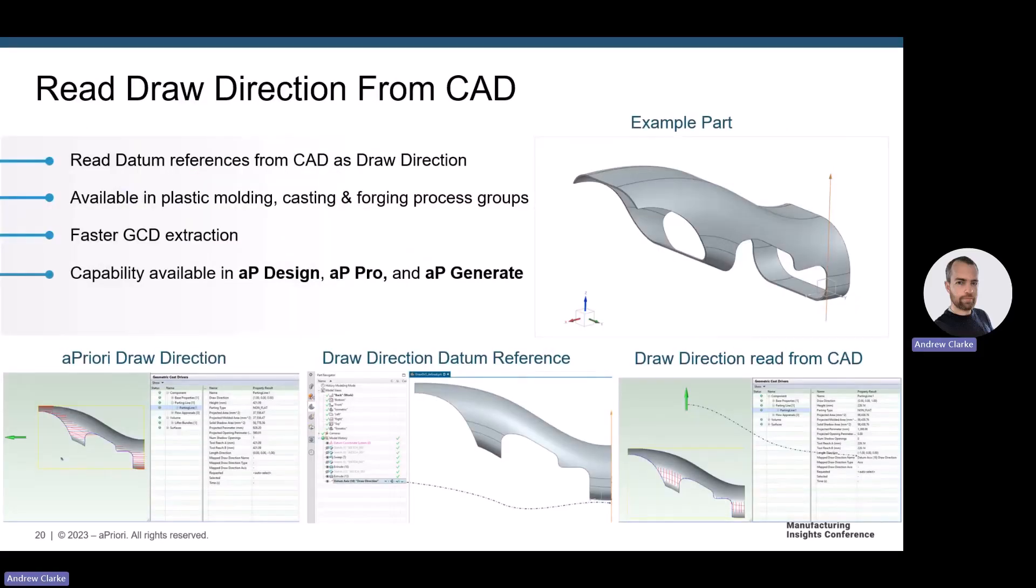We've also made updates to how we set draw direction. Historically, Apriori has provided a powerful proprietary algorithm for analyzing the geometry of molded parts and determining the draw direction. We use this algorithm in our various plastic molding, casting and forging process groups. In some cases, the draw direction selected by Apriori, while reasonable, is different than the intended as-designed draw direction. Apriori does provide the ability for an end user to specify the desired draw direction interactively. However, this requires a user to inspect and edit the draw direction if needed. With this new functionality, Apriori can now be configured to read and use designated datum references in the CAD file as the specified draw direction rather than using the proprietary algorithm. This eliminates the need to manually review and occasionally update the chosen draw direction of your parts. This functionality is particularly useful for supporting high volume lights out workflows which leverage AP generate or Apriori bulk costing and analysis.